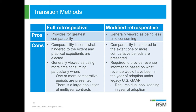Under either adoption method, you are required to maintain two sets of books and records for some period of time — whether you're going back in time or doing that prospectively. That's a key consideration under this standard: the requirement to have two different sets of books for some period of time.